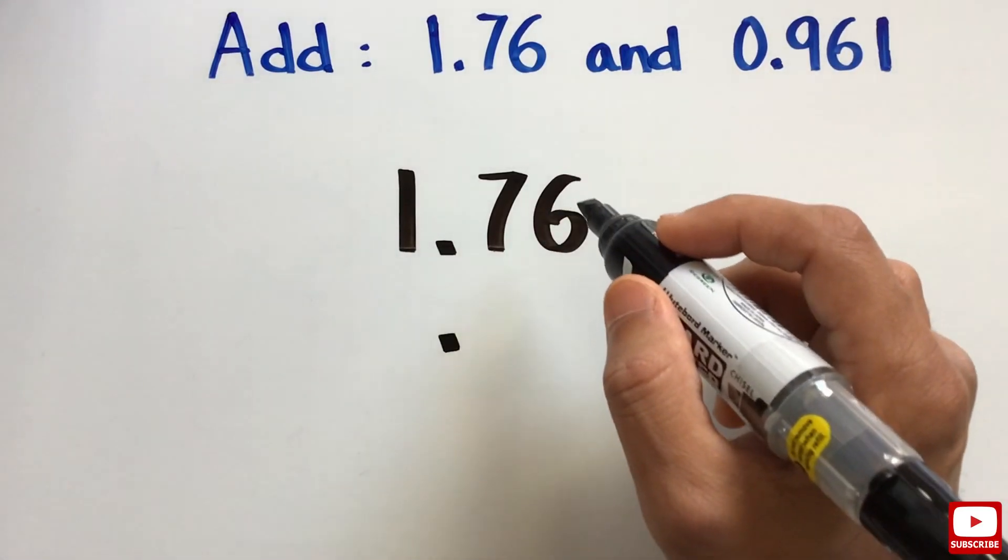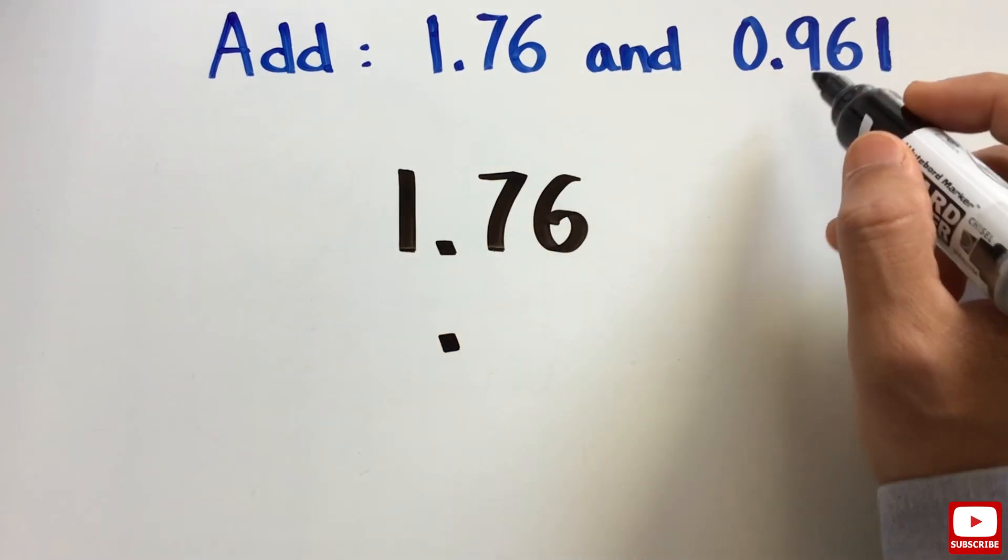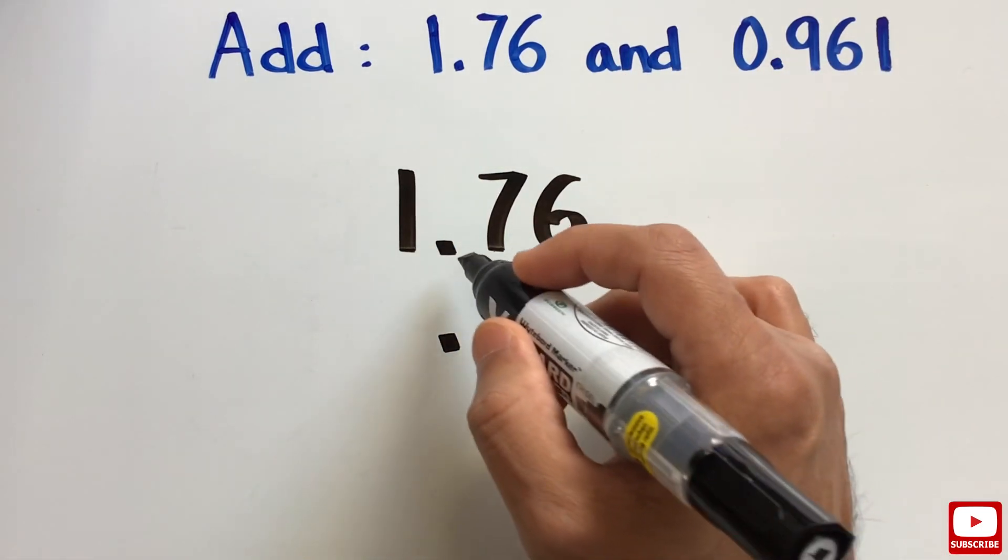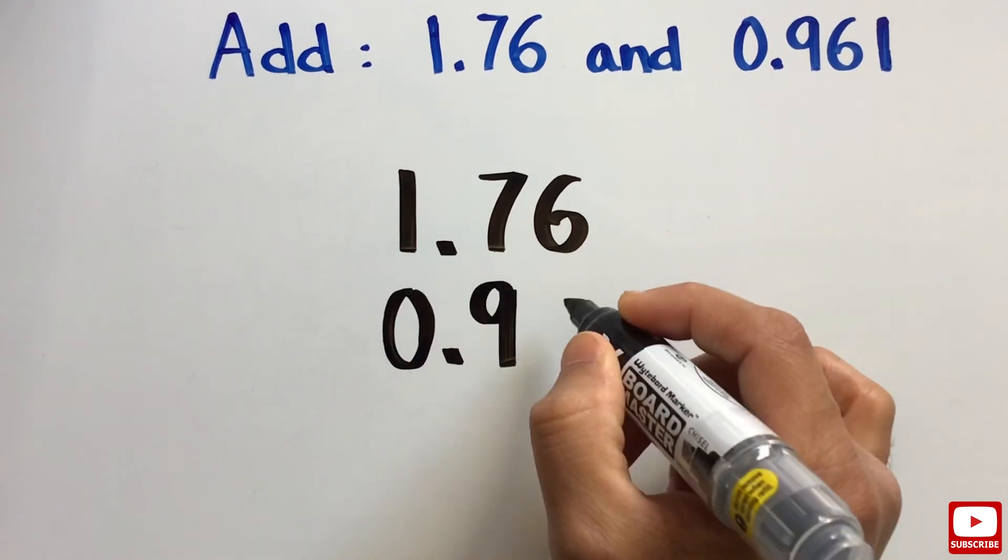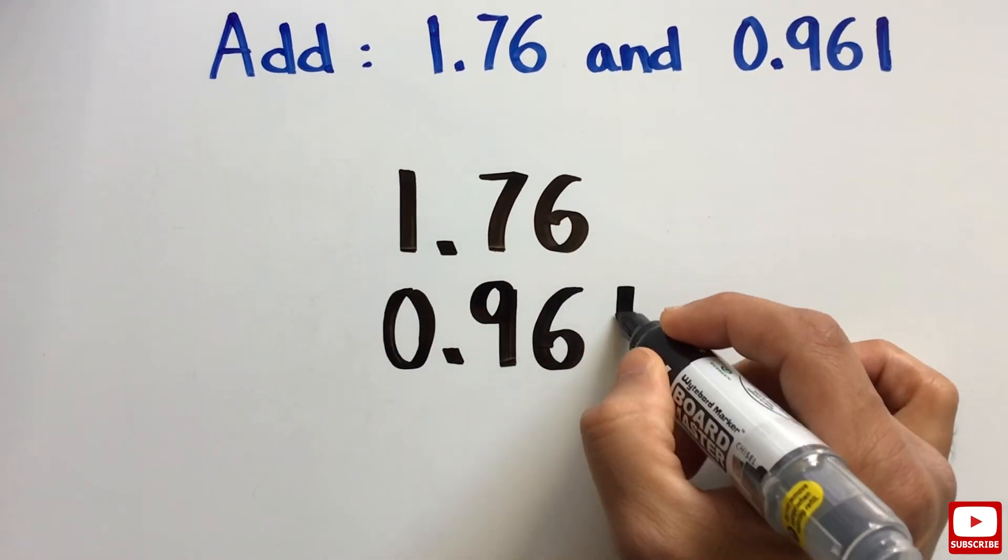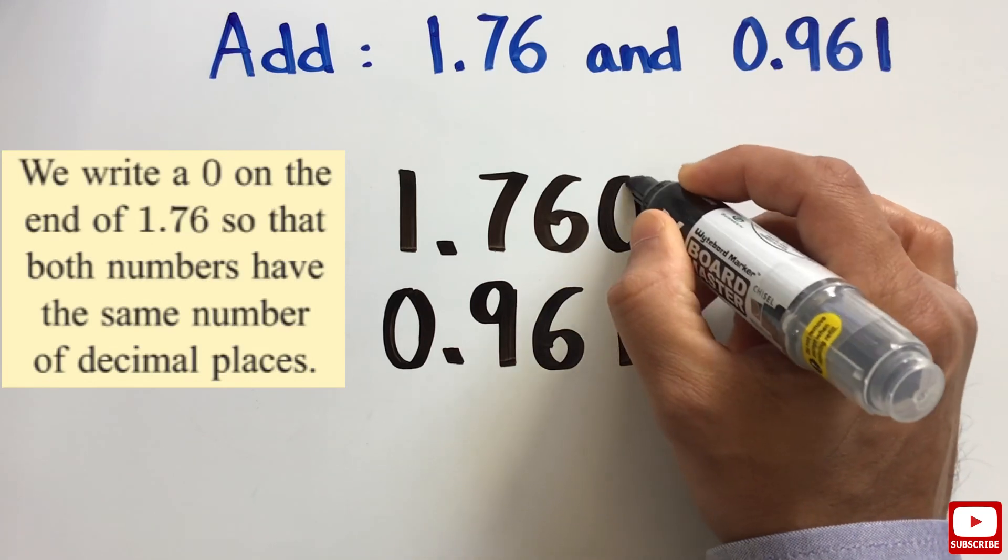However, it is important to note that we write the numbers under one another in such a way that the decimal points line up. And when we line up the decimal points, the digits in each place value will also line up. We fill the empty place value by 0.